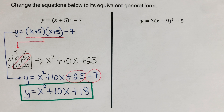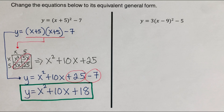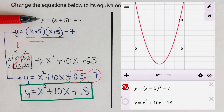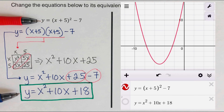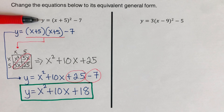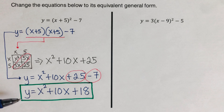On the side you can see the graph of both equations — the graphing form in red and the general form in blue. Both graphs sit on top of each other on Desmos, confirming these two equations are equivalent. They just come in different forms.